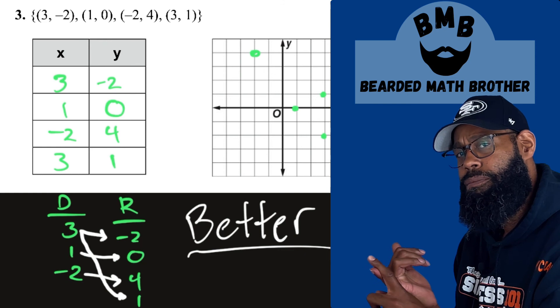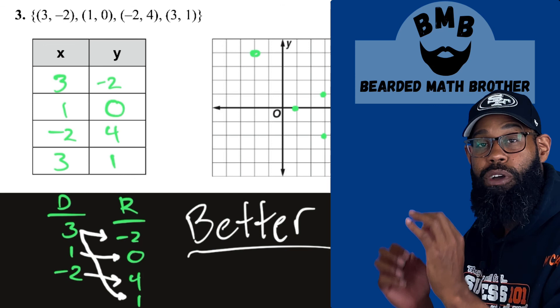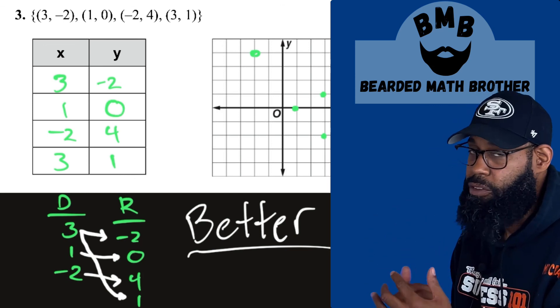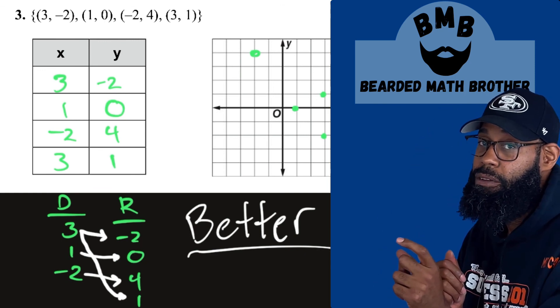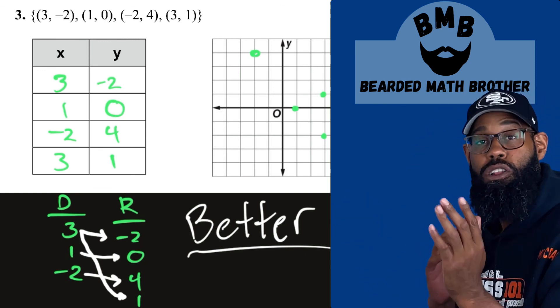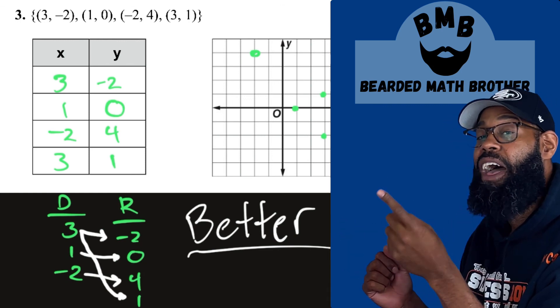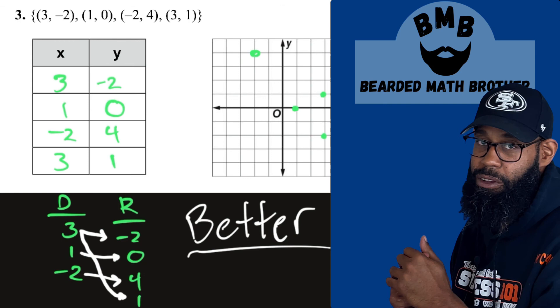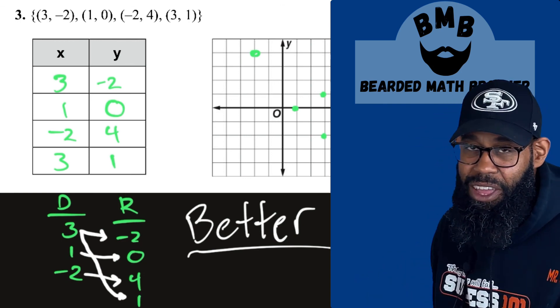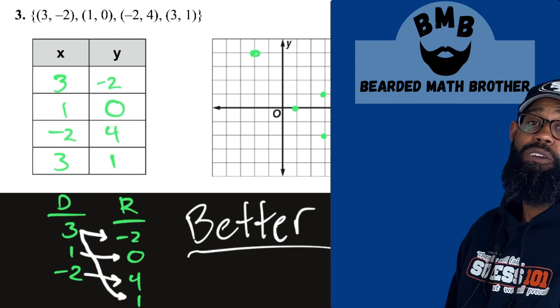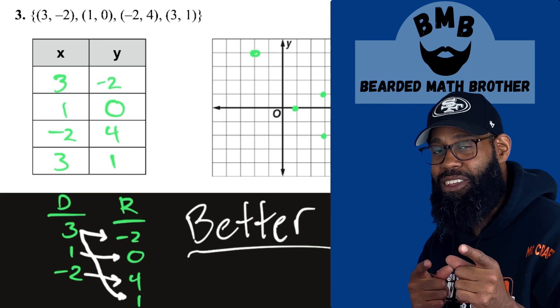And with that, guys, a nice short lesson. The reason why it was so short is because we were identifying relations using the table, putting the values on the table, using the graph, plotting the points on the graph, and by mapping. So mapping probably was the newest one. And again, guys, you did nothing more than list your domains, as you can see, list your range, as you can see, and showing how those values inside are related to each other using the arrows. Guys, it's been a pleasure. You got to love them when they're quick. You got to love them when they're effective. And you got to love the BMB. See you guys in the next video.